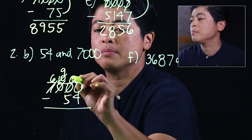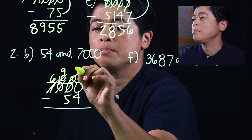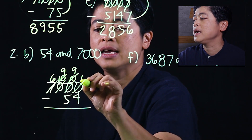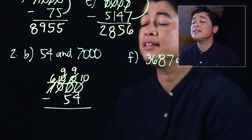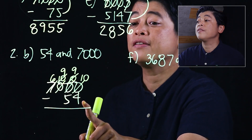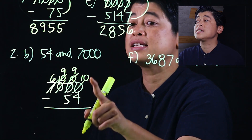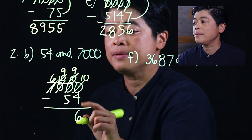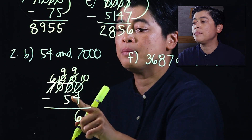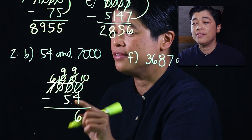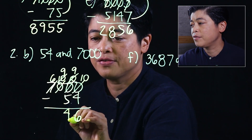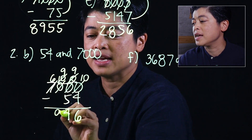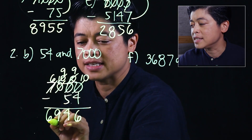Six — this becomes a ten; borrow from that, becomes nine; that becomes a ten; borrow from that, becomes nine; and then ten. So the four needs a six to get to ten, nine minus five is four, nine minus nothing is nine, and six.